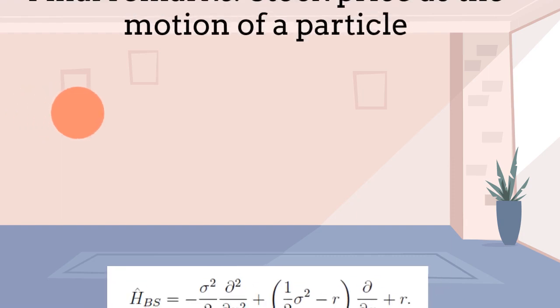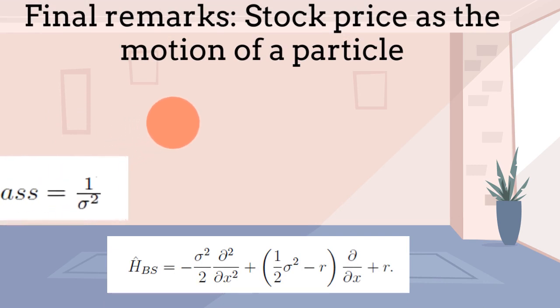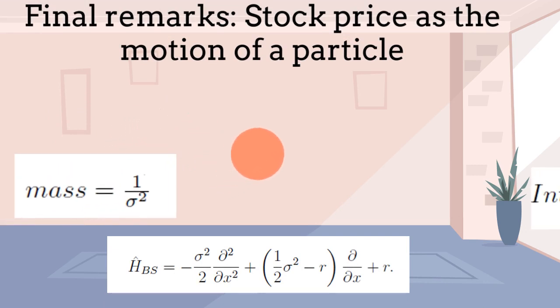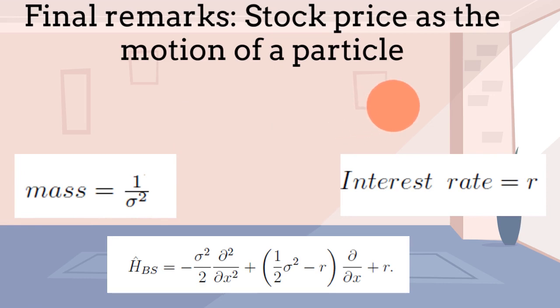We can make some final remarks about the Black-Scholes equation. If we imagine the stock price as the evolution of the motion of a particle, then the volatility is related to the mass of the particle in the Black-Scholes Hamiltonian. Additionally, the interest rate enters in the potential term of the Hamiltonian as a trivial constant term.